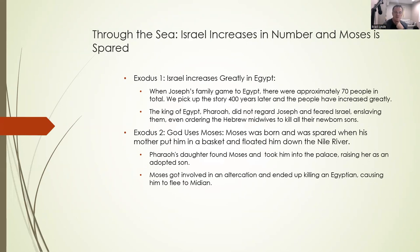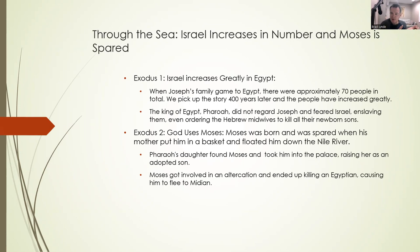I want to start with a few observations. In the first part, Israel is increasing in number and Moses' life is spared. When we left off at the end of Genesis, there were about 70 members of the family of Jacob — whose name was changed to Israel — that moved from the land of Canaan, where Abraham had established their family, down to Egypt. Joseph had been sold into slavery by his brothers, an evil deed, but God used what they meant for evil for good. Joseph found favor and established himself very high in the Egyptian government.